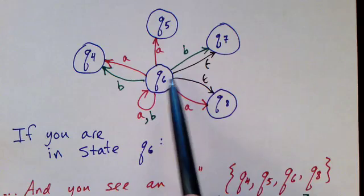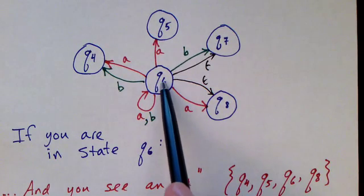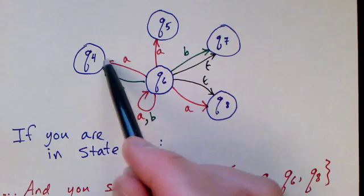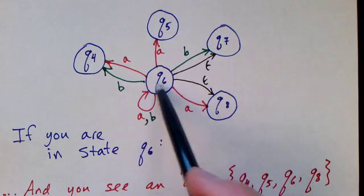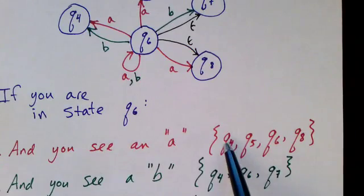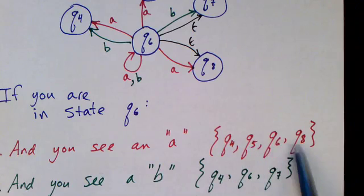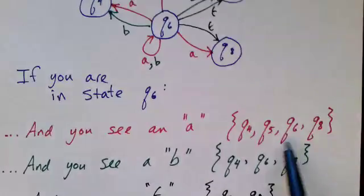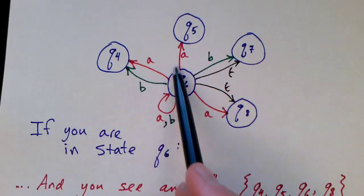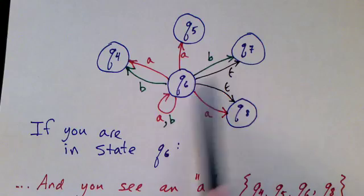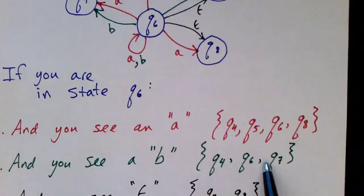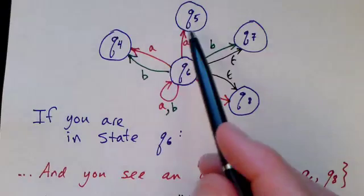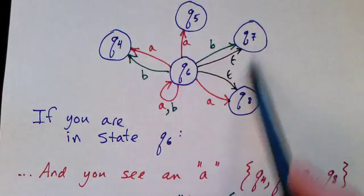And why do we need the power set anyway? Well, here's a fragment of a non-deterministic Turing machine. If we're in state Q6 and we get an A, for example, where do we go? Well, we could go to four or we could go to five, we could stay in six or go to eight. So that's a set. So if we see an A, we go to state Q4, Q5, Q6, or possibly Q8. That's the set of places we can go. If we see a B, well, we could go to four, seven, or six. And finally, if we see an epsilon, we have epsilon edges and we're in state Q6, we could either be in seven or eight.